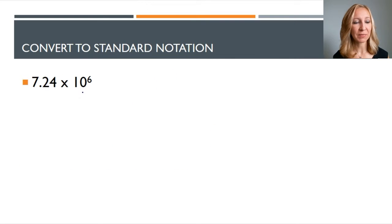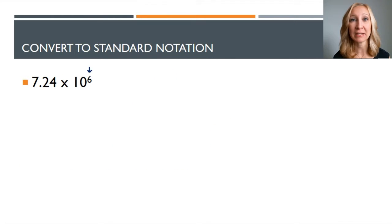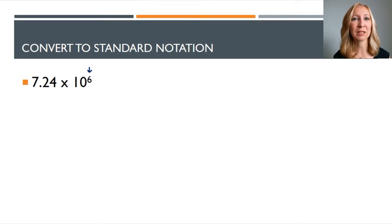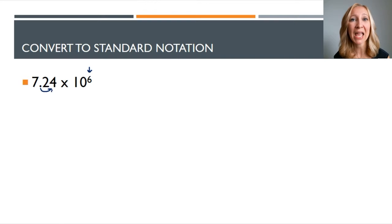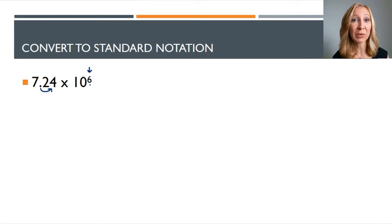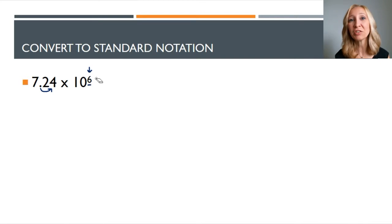Let's take a look at some examples. We have seven point two four times ten to the sixth — we're going to convert this into standard notation. What does that six exponent mean? What you're doing is taking seven point two four and multiplying it by ten six times. So really what we have here is a very large number, and to multiply by ten six times, you need to move the decimal to the right six places.